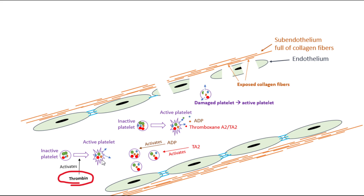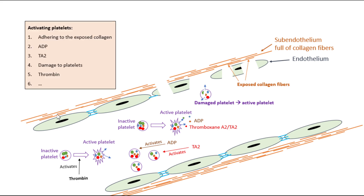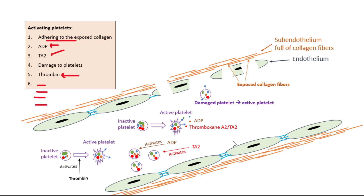As a summary, there are many different ways to activate platelets. In this video we learned about five: platelets touching exposed collagen, and the chemicals ADP, thromboxane A2, and thrombin — and also damage to the platelet itself, which causes its contents to be released.